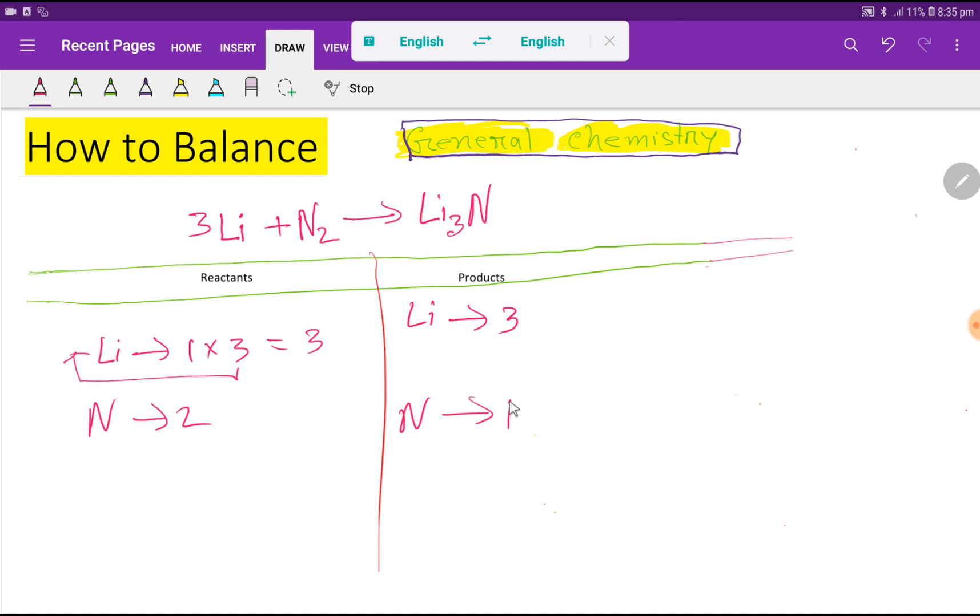So to balance the nitrogen, what can I do? I can multiply here by 2 that gives me 2. This 2 must come before this nitrogen, that is here. If you place here 2, the number of lithium will be 6, so you have to update the number of lithium here. Look, the number of nitrogen is 2.